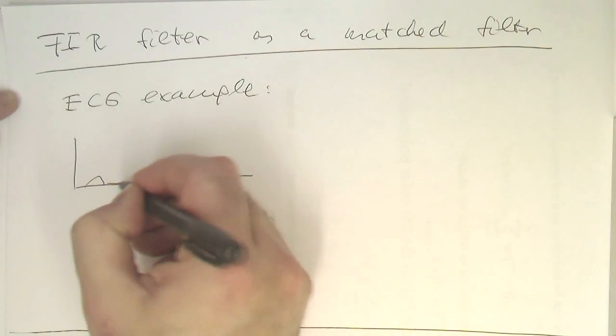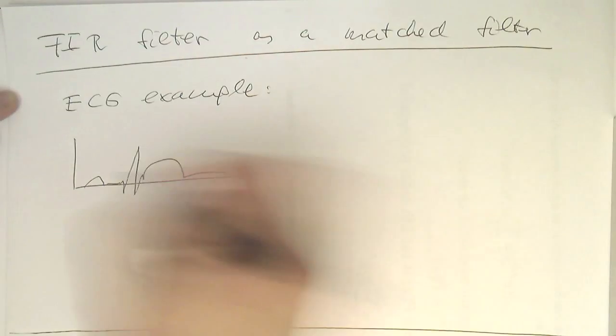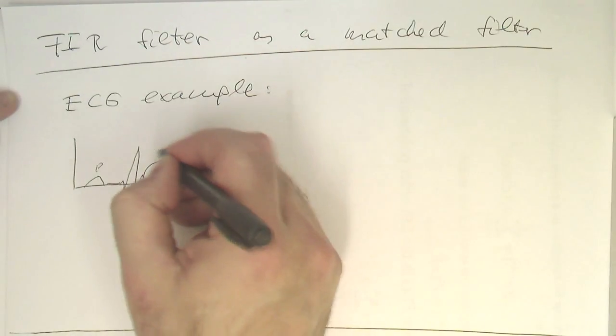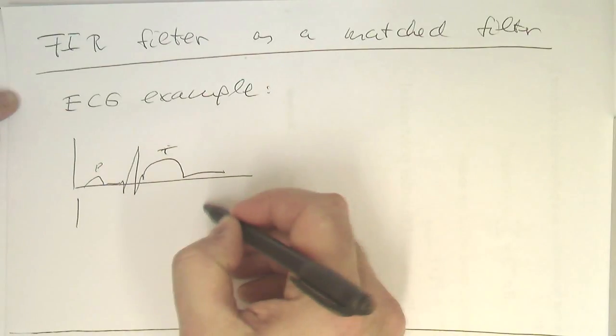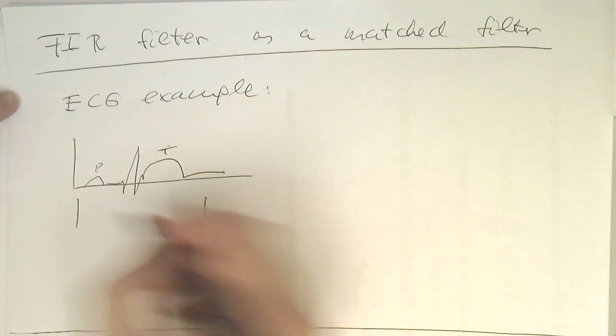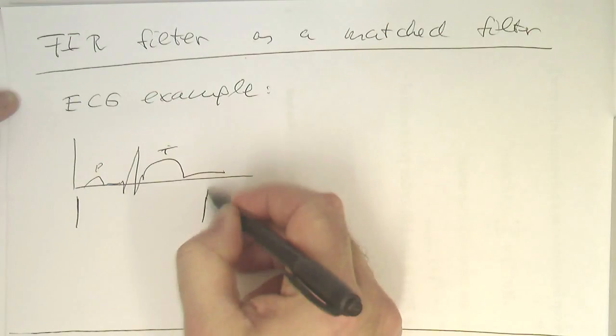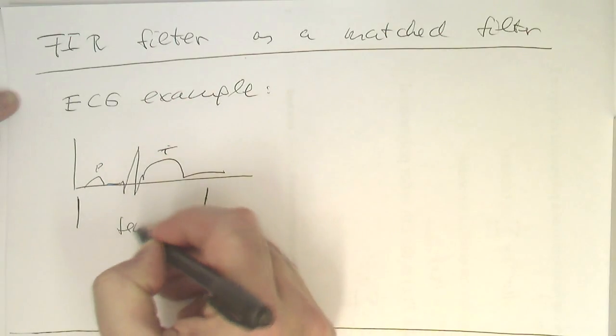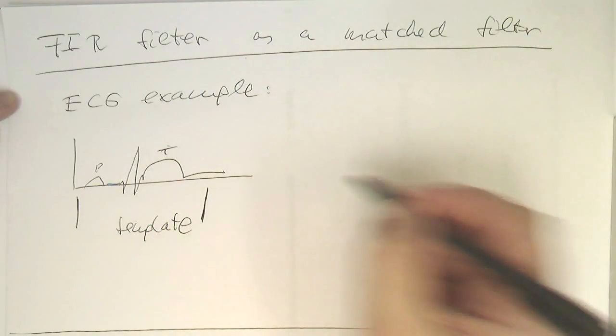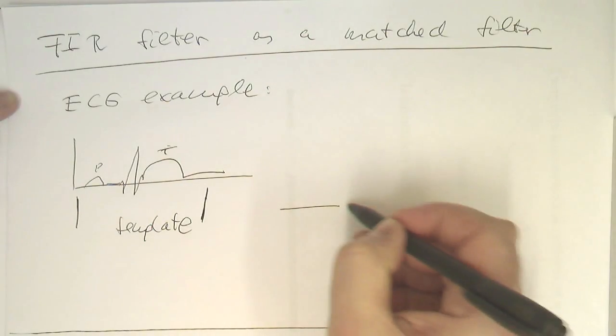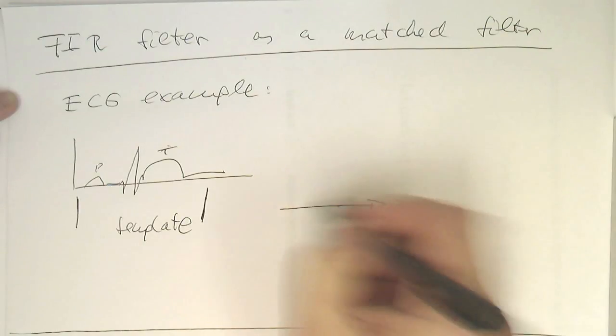So, this is our ECG here. So, that's our P and T wave. So, the short and the long one. And so, if we take this one here, this one as our template, and the only thing what we need to do is, we just need to need to time reverse this.